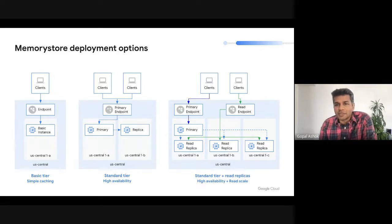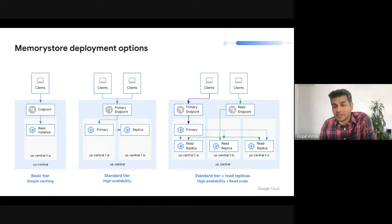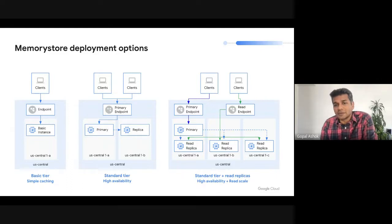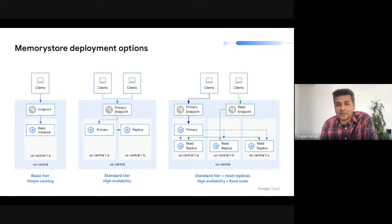In scenarios where you want applications to utilize replicas, you can configure a standard tier instance with read replicas. You can have up to five read replicas in an instance and applications can connect to the read endpoint to scale read queries. If your application is experiencing scaling limits today on a standard tier instance, you can simply enable read replicas and utilize a replica to fan out reads. You can also seamlessly add additional replicas to scale reads linearly. To get optimal redundancy, we recommend having at least two read replicas so that if one replica goes down, the read endpoint will continue to query against the second replica and maintain availability for read queries.